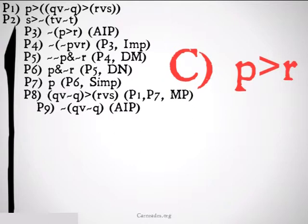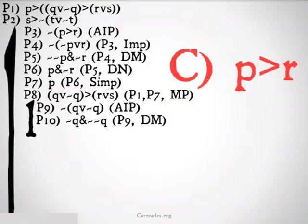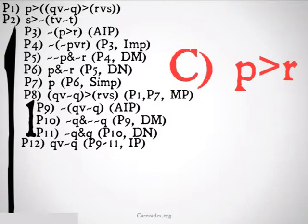Now I'm going to do something a little tricky. I want Q or not Q, and I know that's a tautology. So I'm going to do another mini indirect proof inside my bigger indirect proof. I'm going to assume it's not the case that Q or not Q and draw my line going down. Then De Morgan's rule gets me not Q and not-not-Q, and I end up with not Q and Q — premise 10 double negation. That's a contradiction, so it must be the case that Q or not Q — 9 through 11, indirect proof.